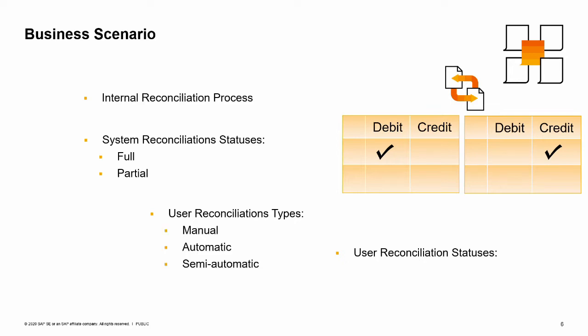However, there will be cases where Maria will perform internal reconciliations herself. These are the user reconciliations. For example, when OEC Computers pays a vendor in advance and receives the AP invoice later on, Maria will have to internally reconcile the vendor master data and match the payment with the AP invoice transactions. Maria can perform user reconciliation using one of the three reconciliation types: manual, automatic, and semi-automatic.